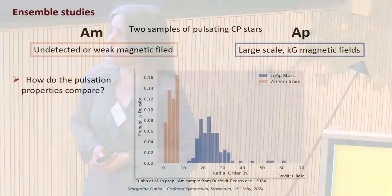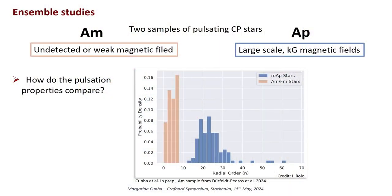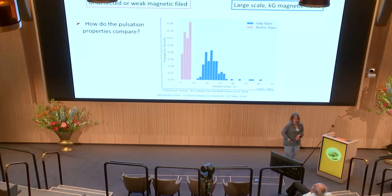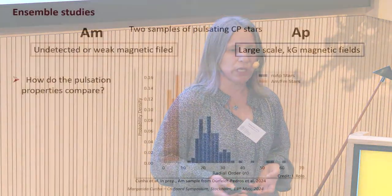What I'm showing you here are results from TESS data — an analysis of TESS data — showing the radial orders for the AM and the AP stars. The radial orders are scaled versions of the frequencies, where you take out the impact of the change in mean density or radius, so you can compare like with like. Even with about 100–150 stars in each of these samples, there is a clear difference between these two distributions. One can ask what is responsible for the pulsations in these two groups of stars being so different.